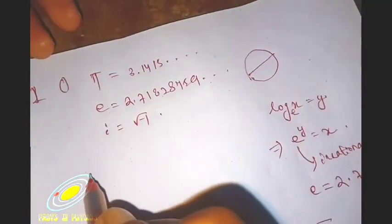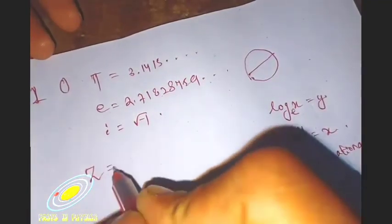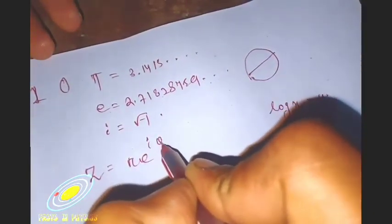Now z becomes r e to the i theta. Now my question is, is there any way to relate these five constants? Yes, I have a very interesting way.